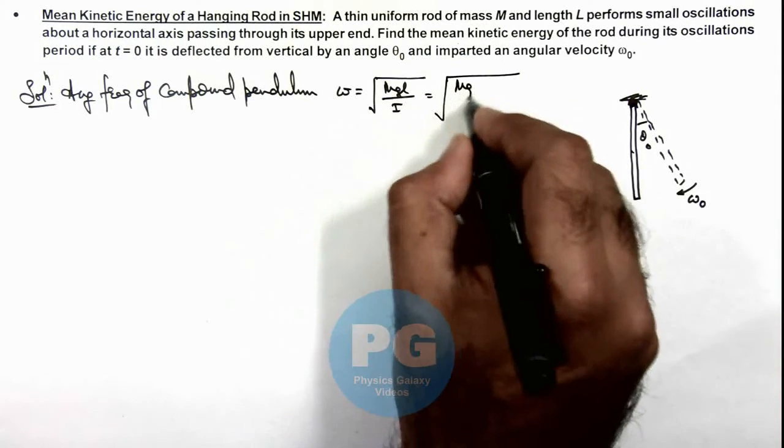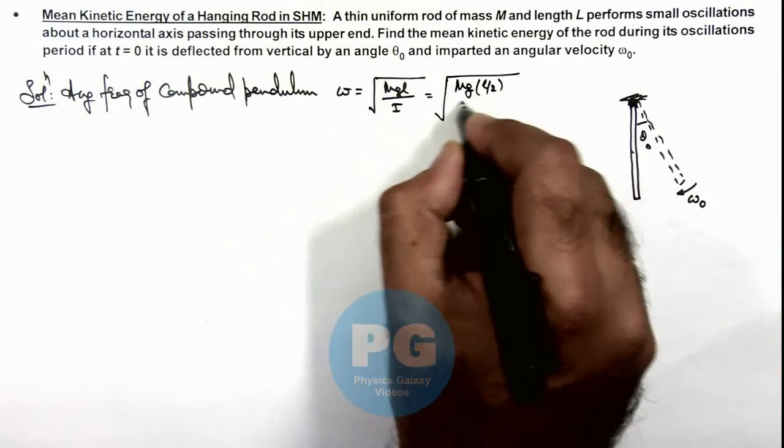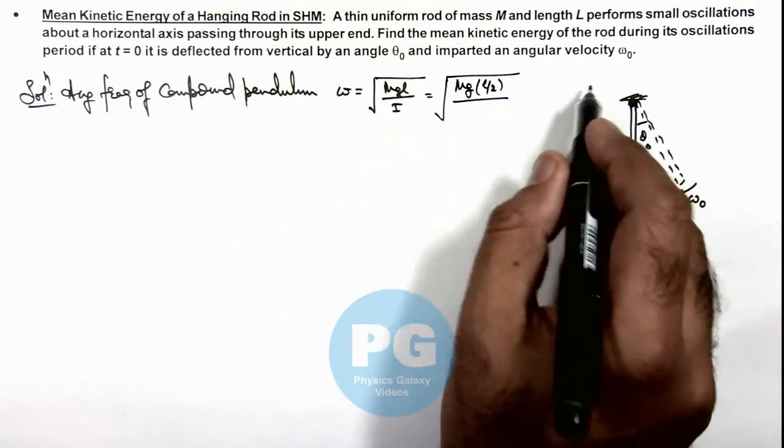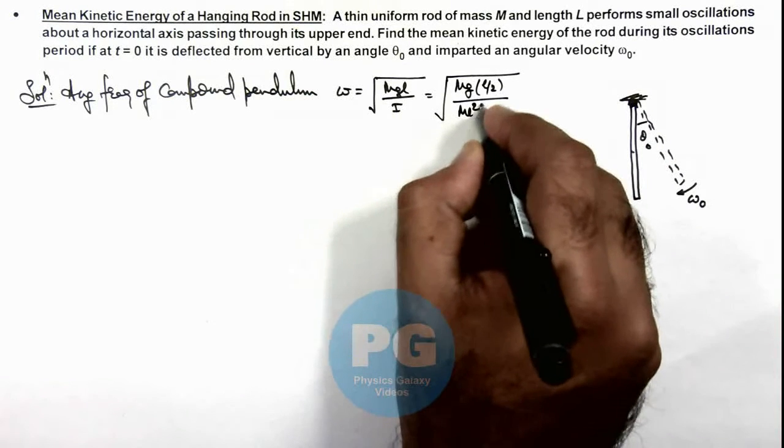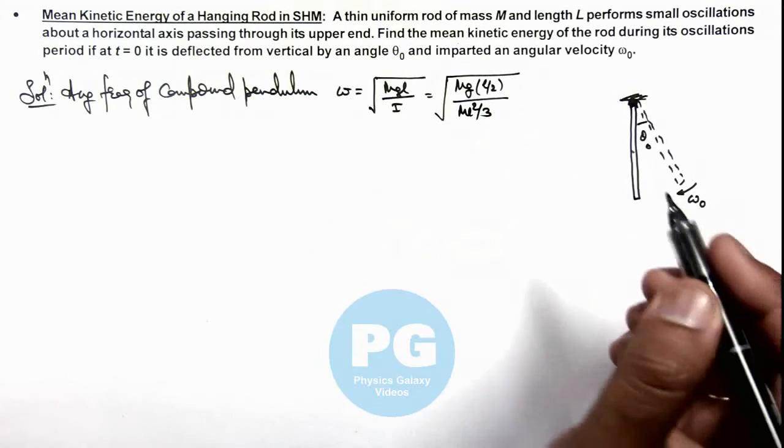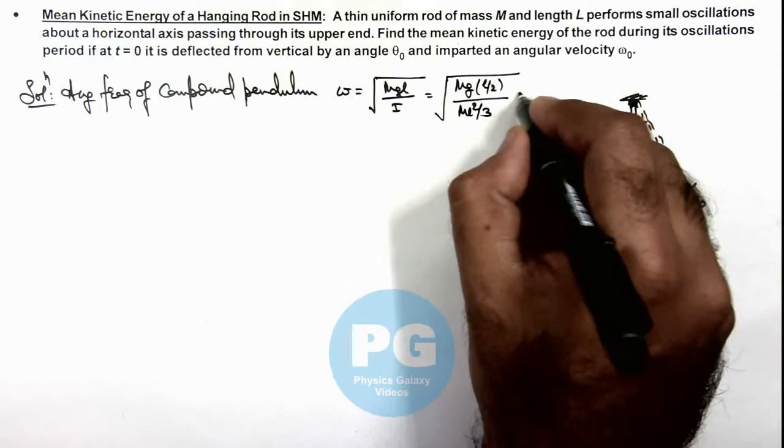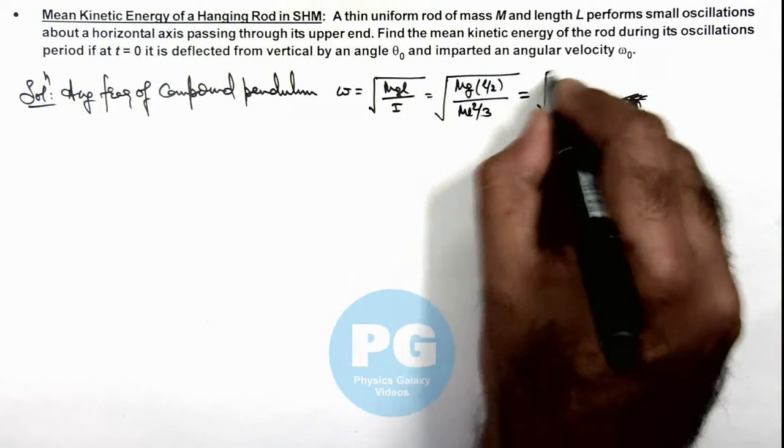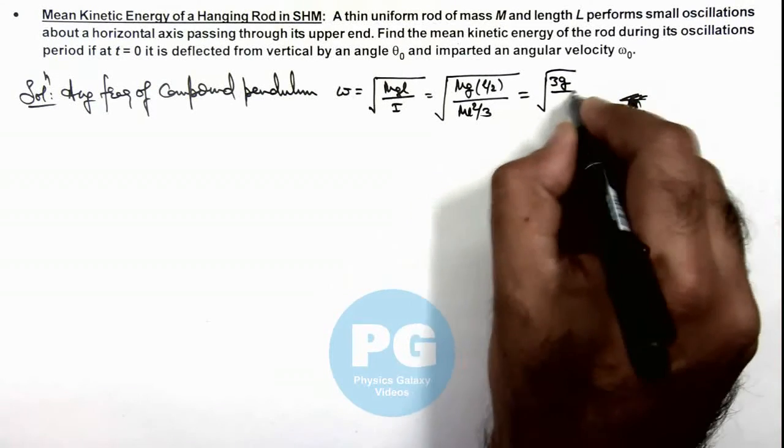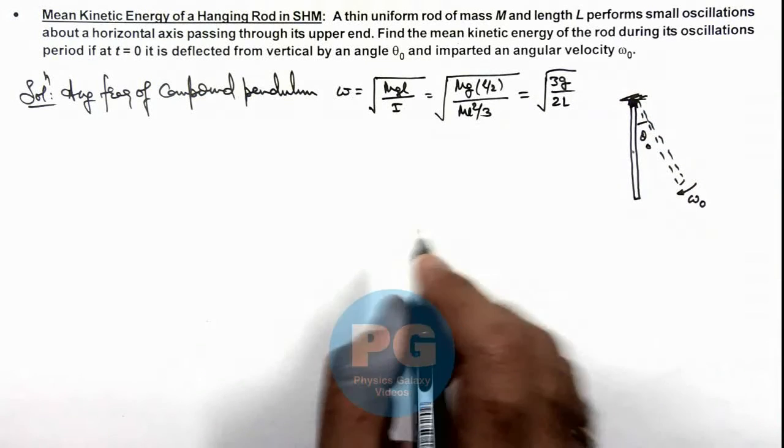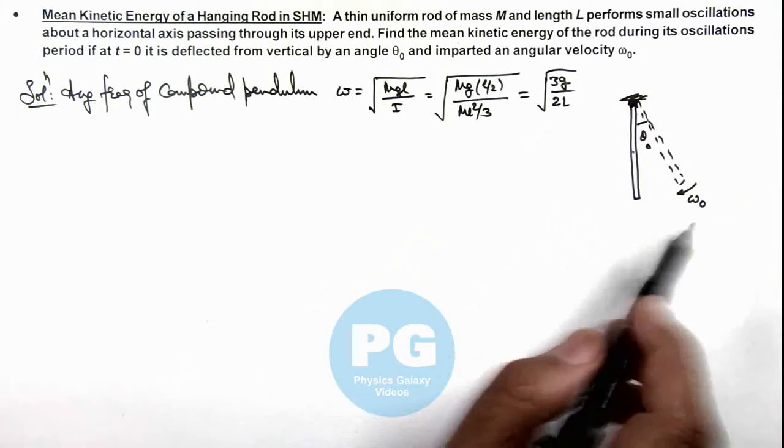The moment of inertia about the axis of rotation we can write as ML squared by 3. So here the value of angular frequency we are getting is root of 3g by 2L. So this is the angular frequency with which the rod is oscillating.